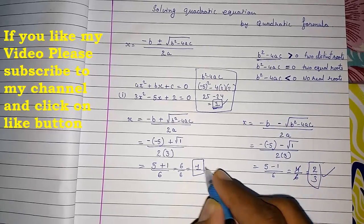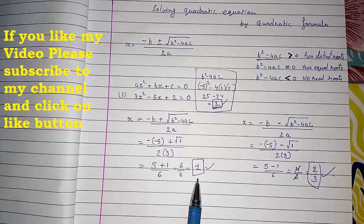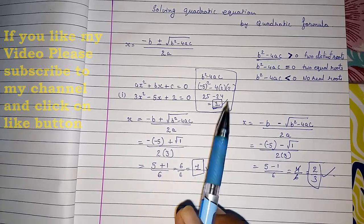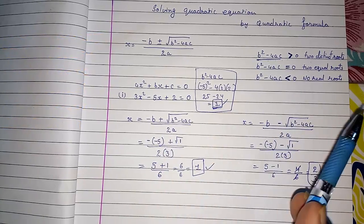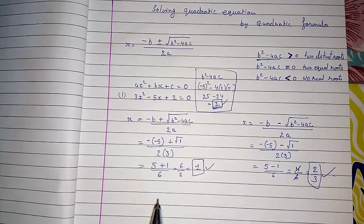So our next zero is 2 by 3. And this was all. So this way we can solve a quadratic equation by quadratic formula. If you like my video please subscribe to my channel. Thank you so much for watching my video.